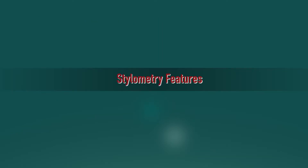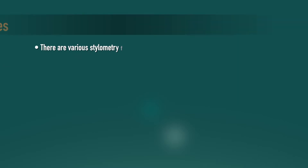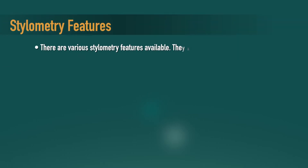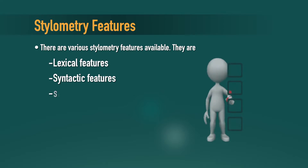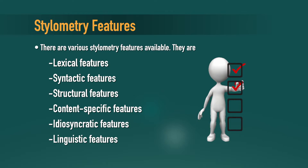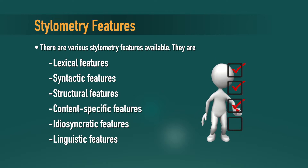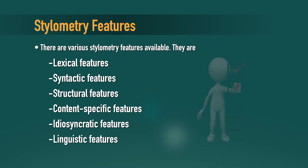Now let's move on to stylometry features. There are various stylometry features available in the literature. They are: lexical features, syntactic features, structural features, content-specific features, idiosyncratic features, and linguistic features.